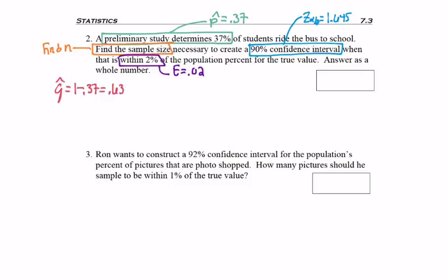And so the only thing is q-hat, which is 0.63 that I had to find. So I plug everybody into the formula, starting with my critical value squared. I do have a p-hat times a q-hat, and then I can divide by the margin of error, which is squared itself.